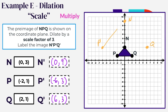Connect the dots to form the dilated triangle. Notice the triangle is not congruent — it is similar, meaning the same shape, but not the same size. So with dilation, the triangles are the same shape but different size, whereas with translation and reflection, the triangles are both the same shape and same size.